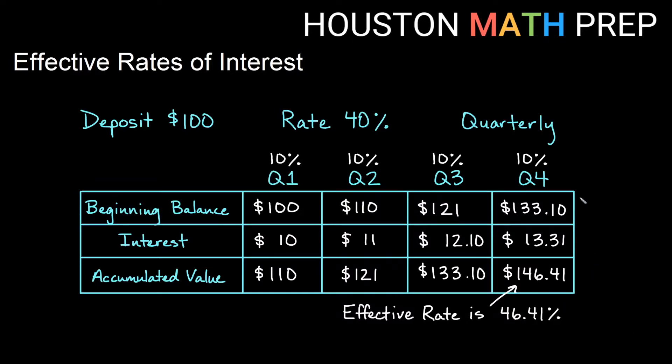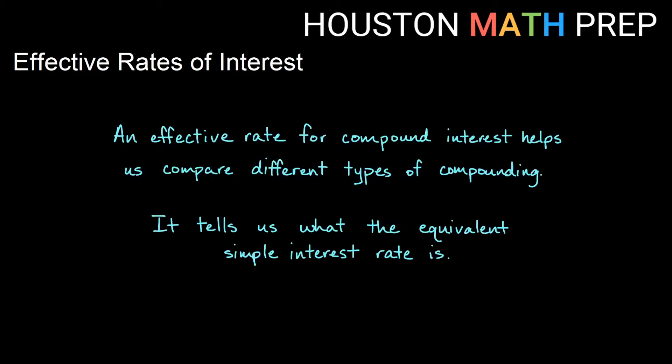So if I were to get simple interest and my accumulated value became $146.41, then this would be the equivalent simple interest. So our effective rate for compound interest helps us compare different types of compounding all in a similar format. It tells us what the equivalent simple interest rate is.